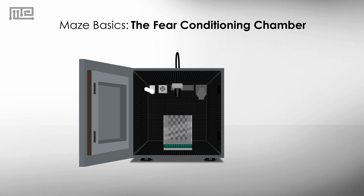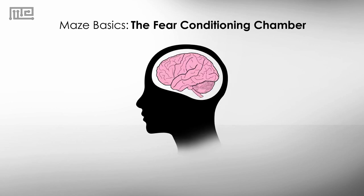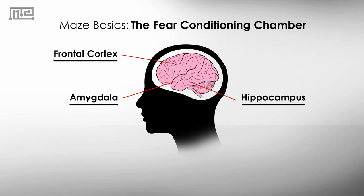The fear conditioning chamber is a behavioral task widely used in neuroscience to assess associative learning in rodents. Associative learning is the process by which an organism learns to anticipate events by creating an association between two stimuli. The major brain areas shown to be involved include the amygdala, hippocampus, frontal cortex, and cingulate cortex.